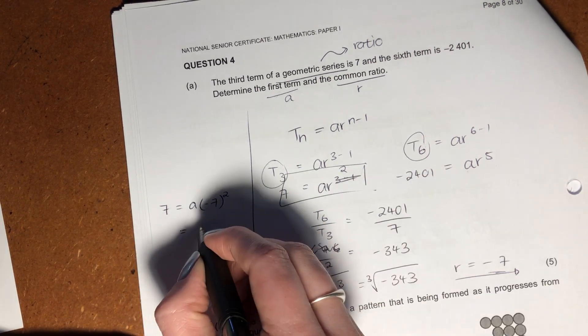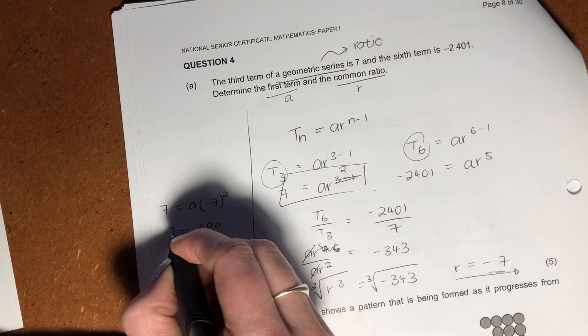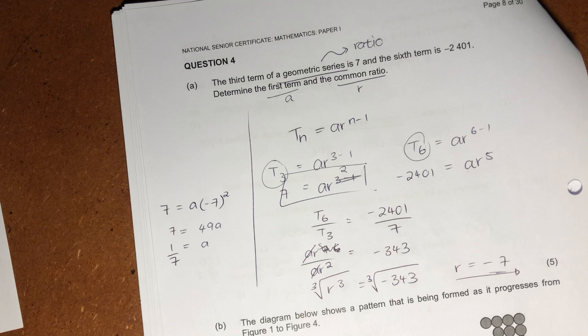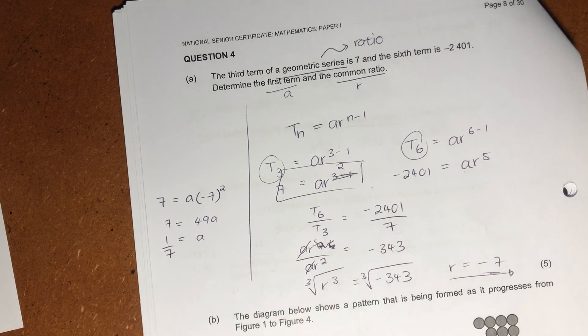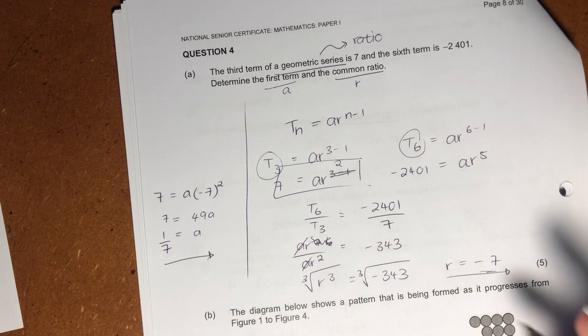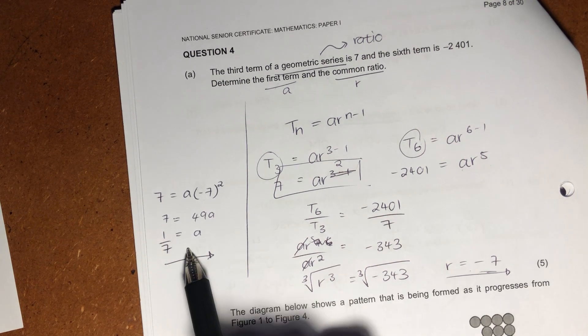So we know that 7 equals A times by negative 7 all squared. All I've done is I've put my common ratio into my formula, and now I'm going to solve for A. Okay, so this becomes 49A equals 7. So A is just going to be 1 over 7. And we have then found the two things that they asked us to. Our ratio and our A value.